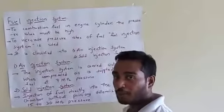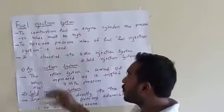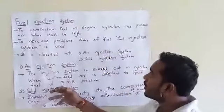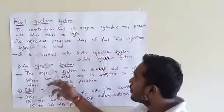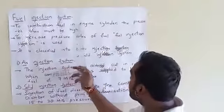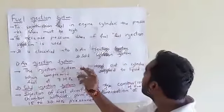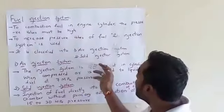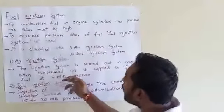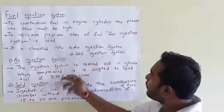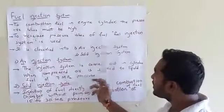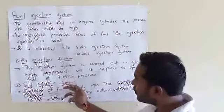Hi everyone, today I am going to explain the fuel injection system. In the fuel injection system, combustion of fuel takes place in the engine cylinder where the pressure values must be high. To increase the pressure values of the fuel, the fuel injection system is used.